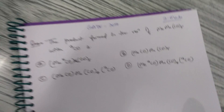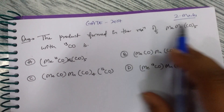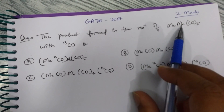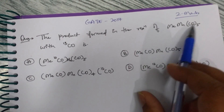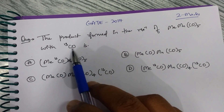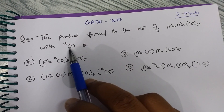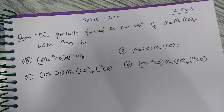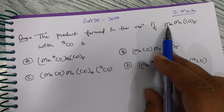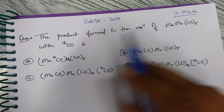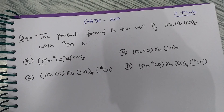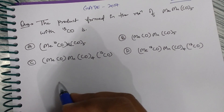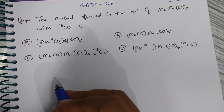The next question also came in the GATE 2017 exam for two marks. The question is: what is the product formed in the reaction of methyl manganese pentacarbonyl (CH₃Mn(CO)₅) with ¹³CO? Note that ¹³CO is just carbonyl but using the carbon-13 isotope. There are four different options. This question is from insertion reactions, and I will first solve it using the mechanism, then show a shortcut.